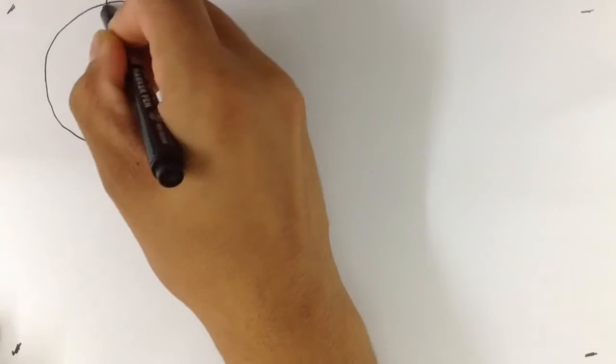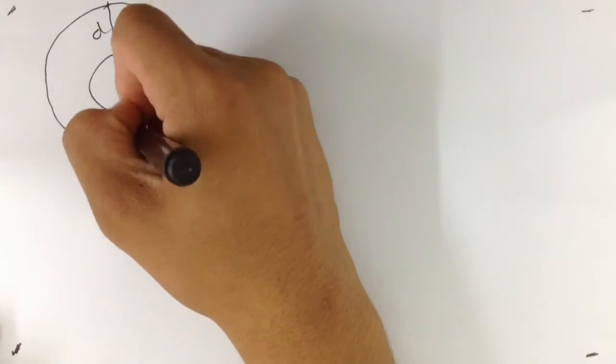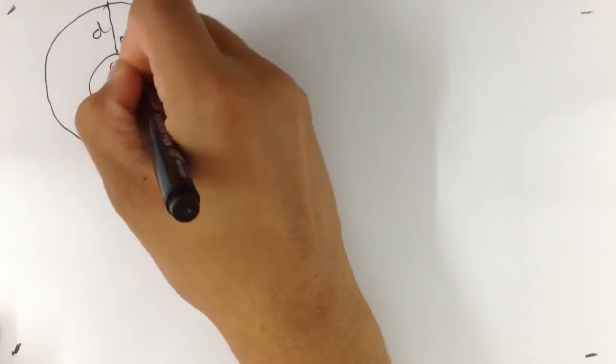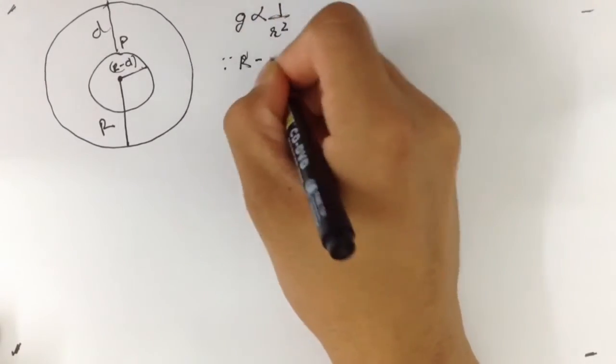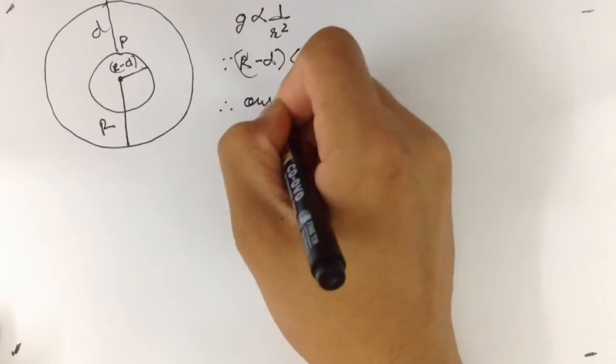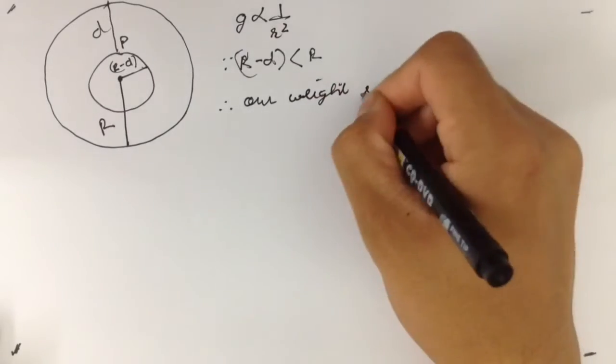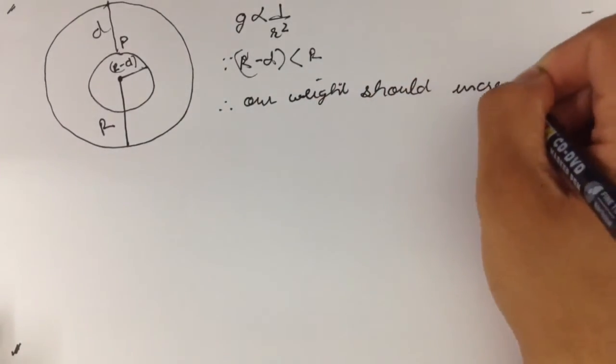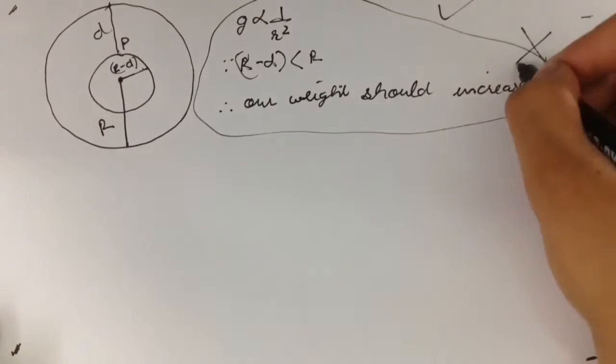Say now that we are D distance deep in the Earth. If the radius of the Earth is R, our new radius should be R-D. Since R-D is less than R, acceleration due to gravity should increase, and therefore our weight should also increase. Whereas all this seems right, it's actually wrong.